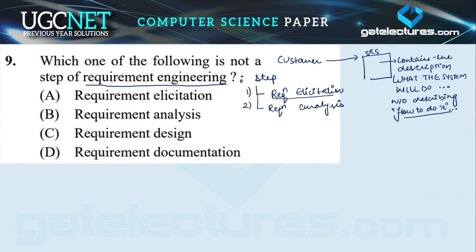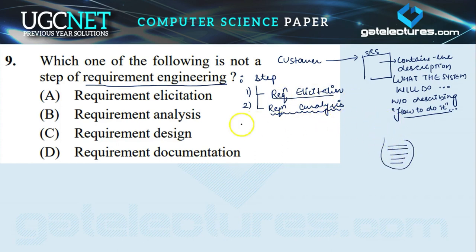The next step is requirement analysis, which is the second step. At this step we gather all the information required to develop the software. Requirement analysis is the second most important activity. In this step we refine the gathered information in order to make consistent and unambiguous requirements. In step one there is collective detection of information, and in requirement analysis we refine and delete all the ambiguous requirements present from the requirement elicitation step.